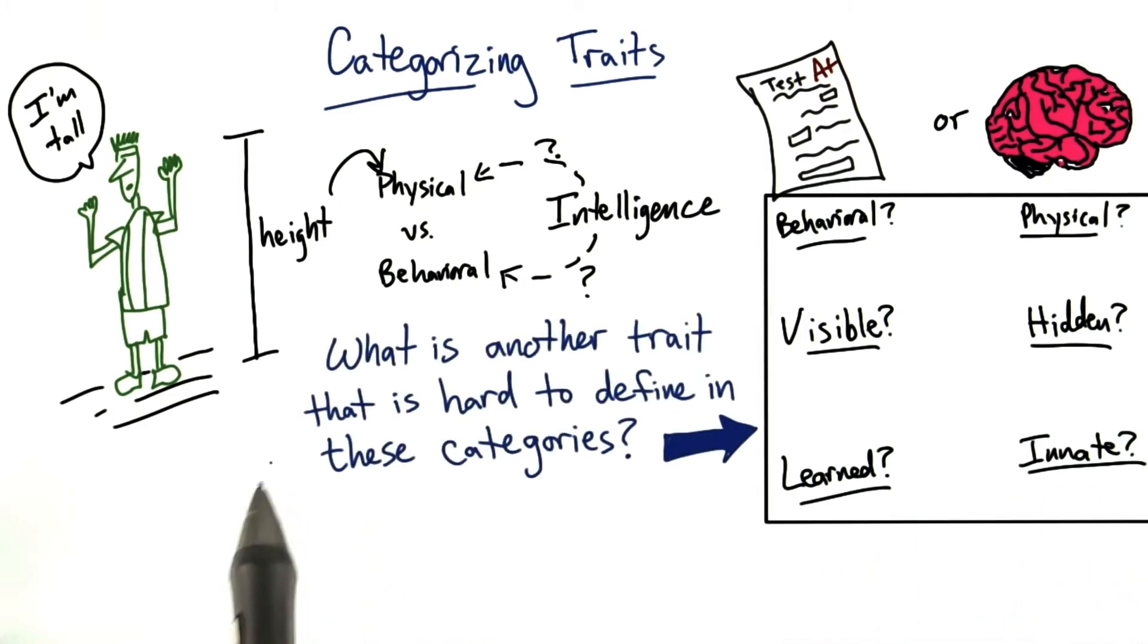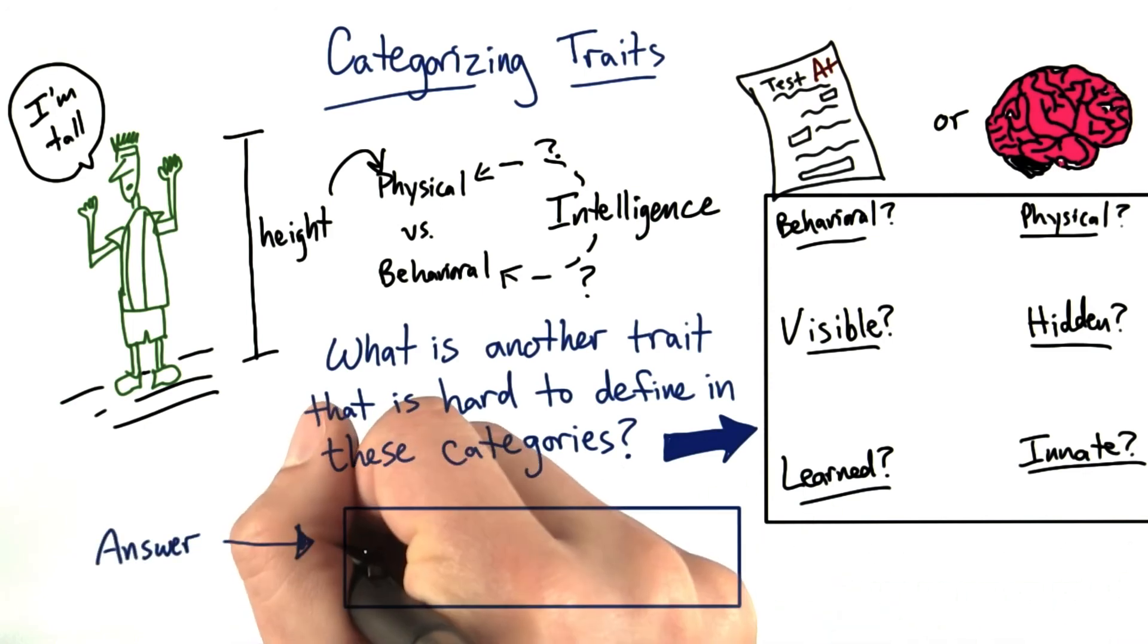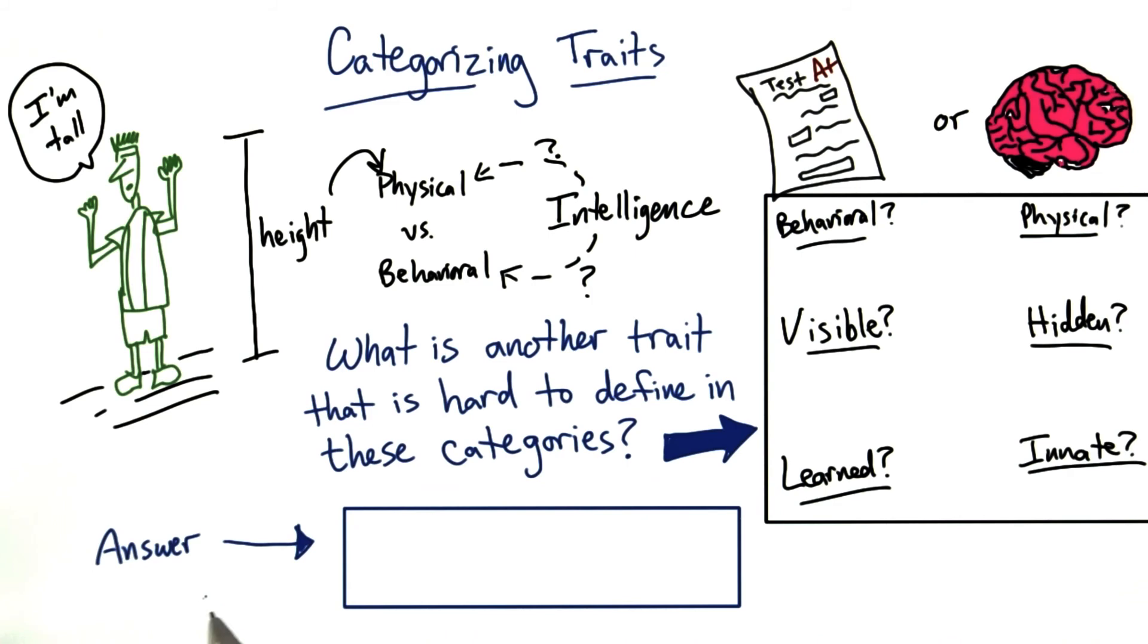Can you think of another trait that's hard to define in these categories? Try to use a one-word answer, and remember, there's no right or wrong response here. Just want to get you to think about which traits could be hard to categorize.